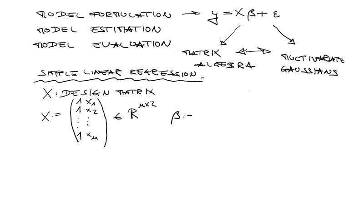The beta parameter vector has two entries in this case, because you multiply the design matrix — which has two columns — with the beta parameter vector, and for a matrix product you need two columns here and two rows there. So beta is a two-dimensional vector. These are the values of the independent variable, and these are parameters.